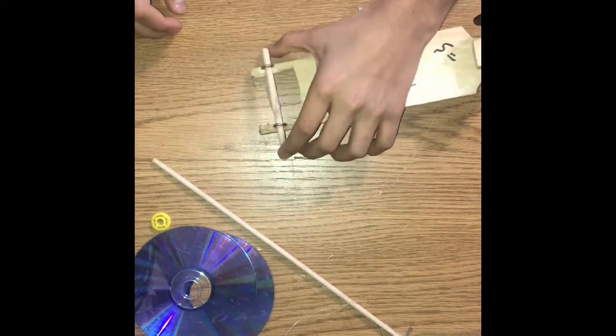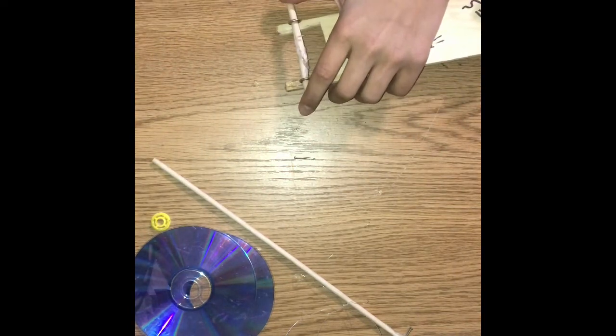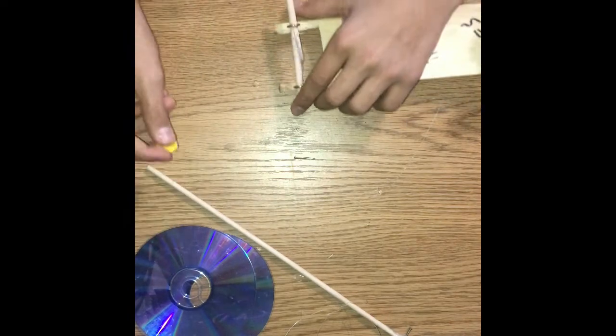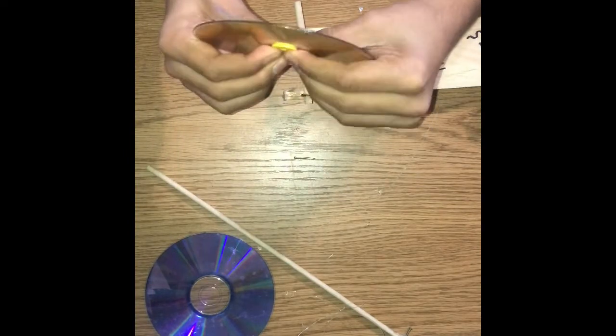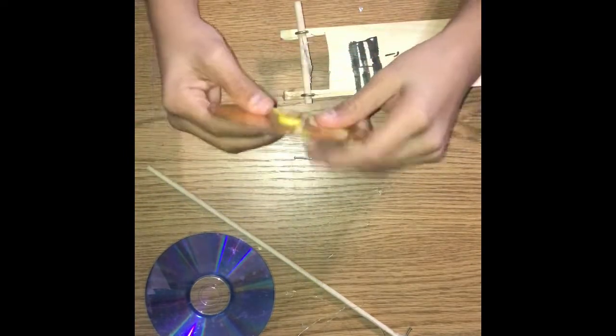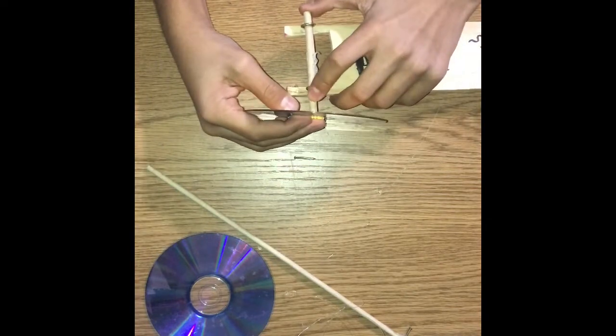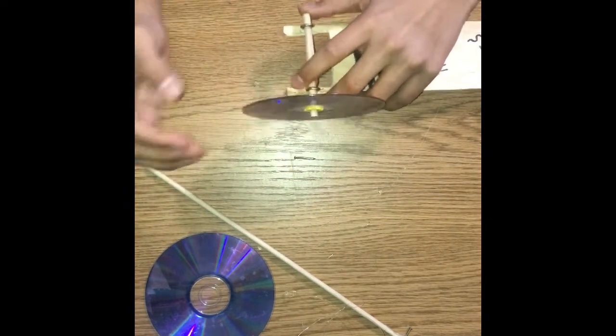Alright. So, we've got the wooden dowel on. And now, we need to put the CDs on. So, I have these little things that can connect to the CD. And the middle part also fits in wooden dowels. So, we'll be putting these CDs on. And, alright, the first one's on.